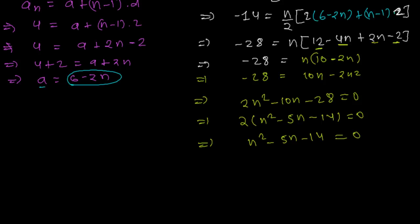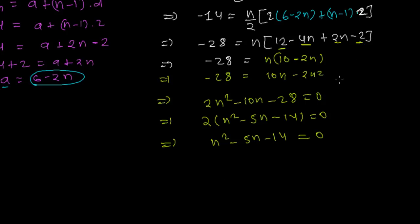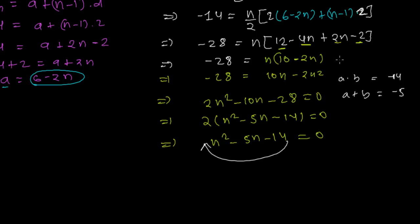Dividing through by 2: n² - 5n - 14 = 0. Now we need to solve this quadratic equation for n. Using the middle term splitting method, we need two numbers whose product is -14 and whose sum is -5. Those numbers are -7 and 2: (-7)×2 = -14 and (-7)+2 = -5. Perfect.